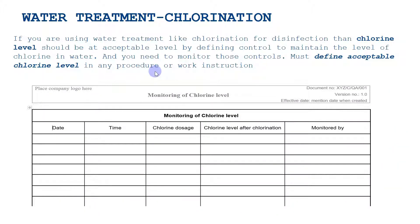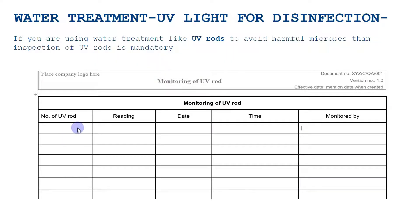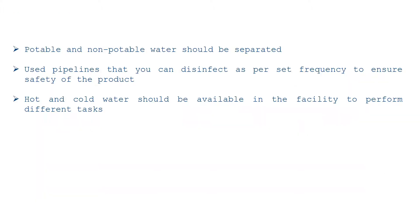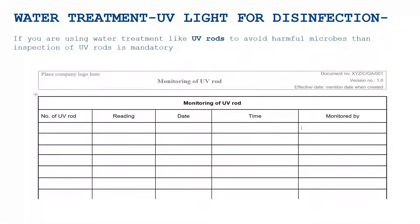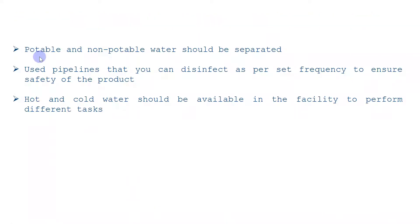Sometimes we use other water treatment methods, like UV rods. In this case you need to note the reading of UV rods — the number of UV rods, the reading, the date of monitoring, time, and monitored by. Please include the document header in this document as well to make it controlled, as we do for the chlorination document. If you are not using these methods in your premises, you do not need these documents; but if you are using them, you need to have these documents.